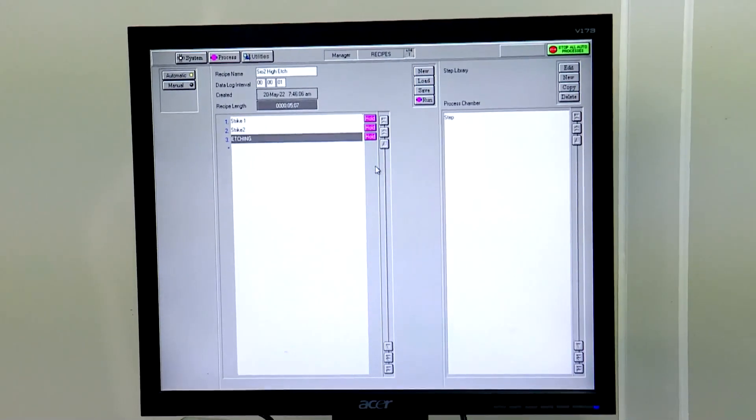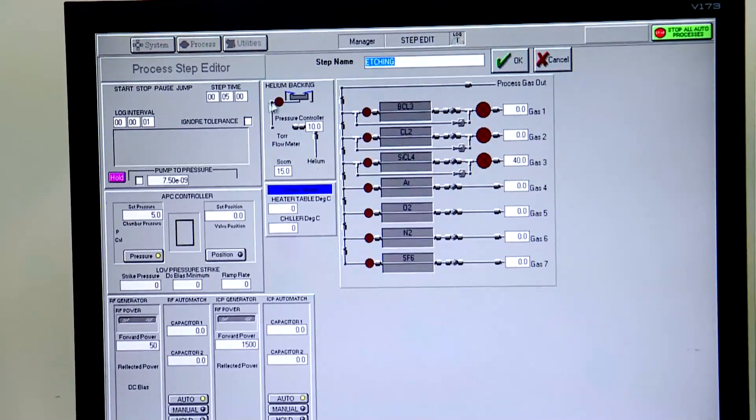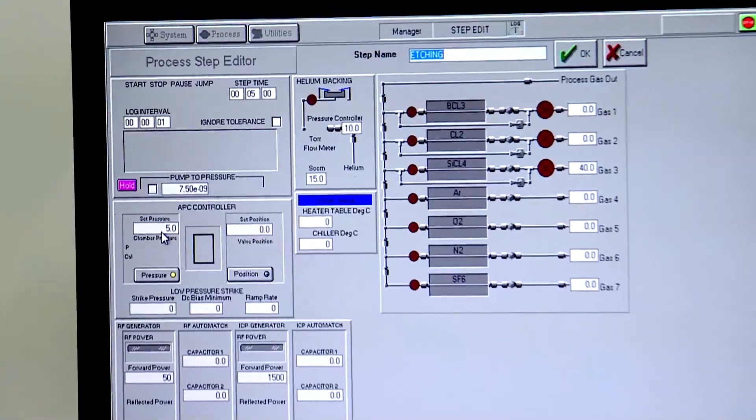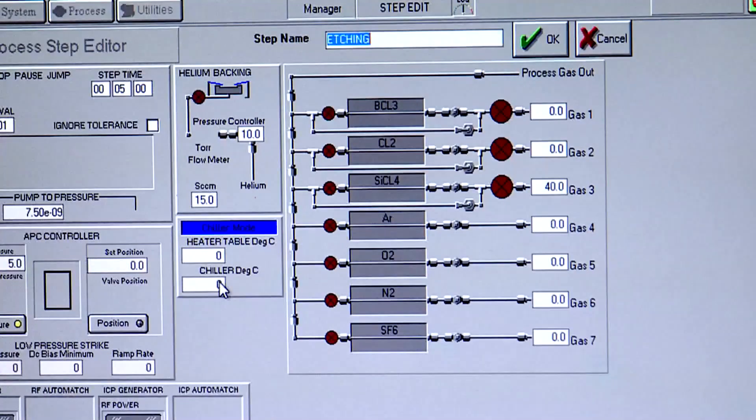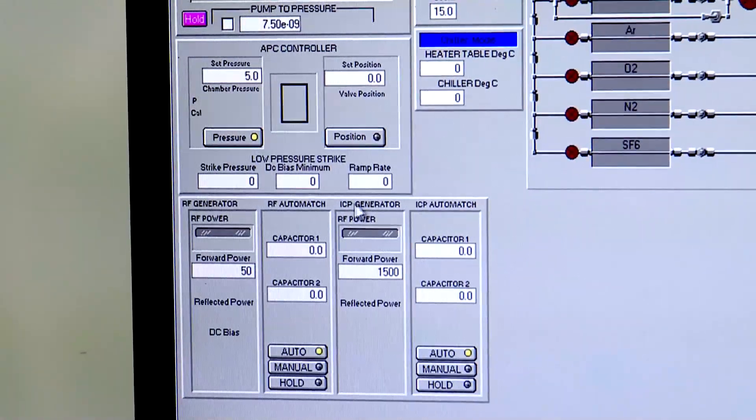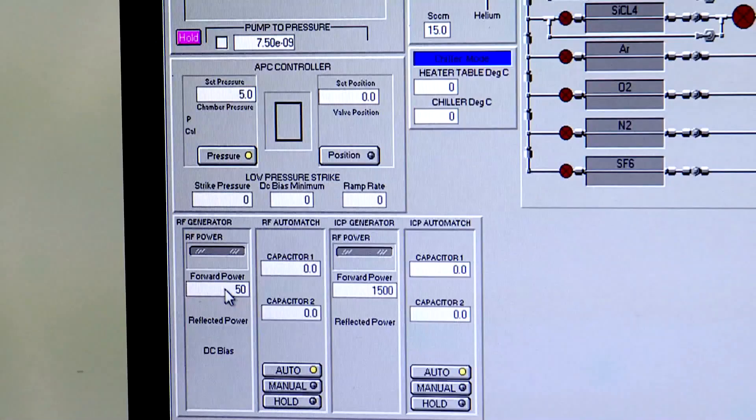Like gas flow rates, CHF3, that is 40 SCCM, process pressure, that is 5 mTorr, chiller temperature, 0°C, process time, 5 minutes, and ICP, 1500 watts, and RF power, 50 watts.